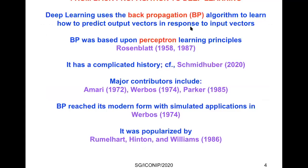Deep learning uses the backpropagation algorithm for learning how to predict output vectors in response to input vectors. Backpropagation was based on perceptron learning principles that Frank Rosenblatt started to introduce in the 1950s. It has a complicated history, which Juergen Schmidhuber beautifully reviewed in an article from this year. Major contributors include Shuichi Amari, Paul Werbos, and David Parker.